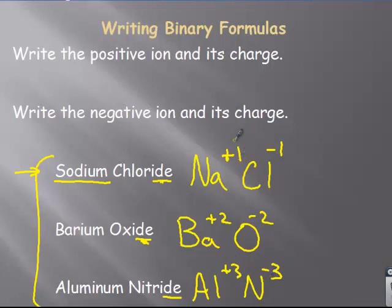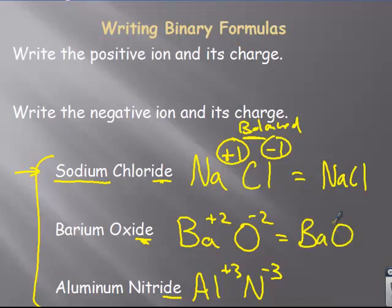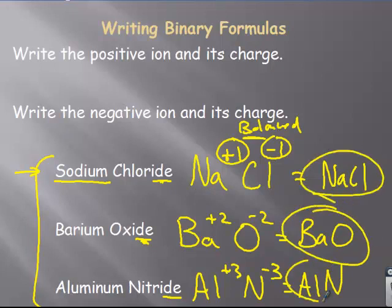What I mean by simple is you can see the charges, plus one and minus one, are already balanced. When the charges are already balanced, you just rewrite the formula. So plus one, minus one, already balanced. Plus two, minus two, already balanced. Plus three, minus three. Again, already balanced. So that's the simplest type.